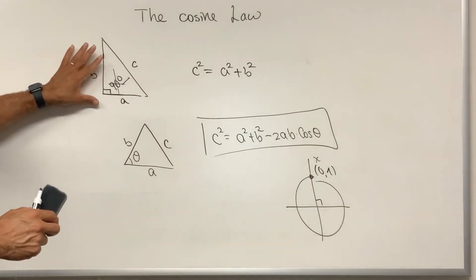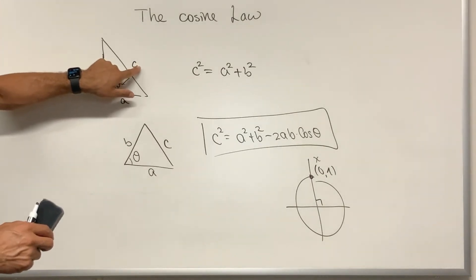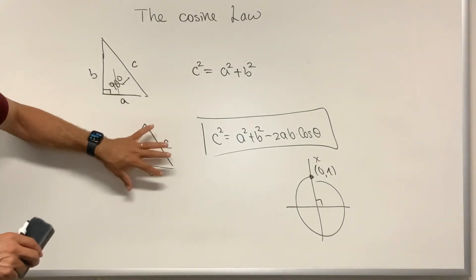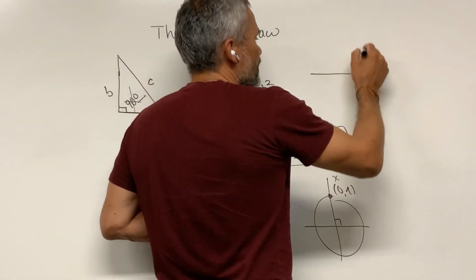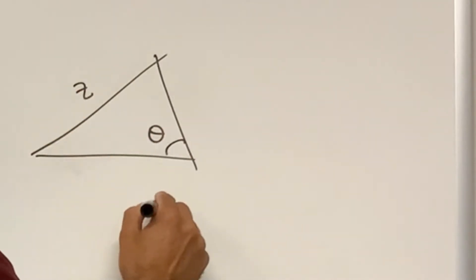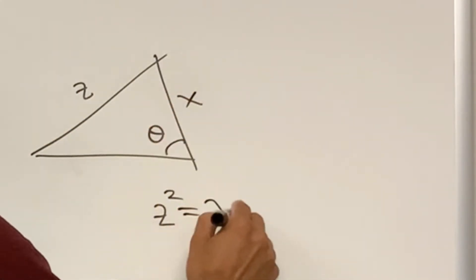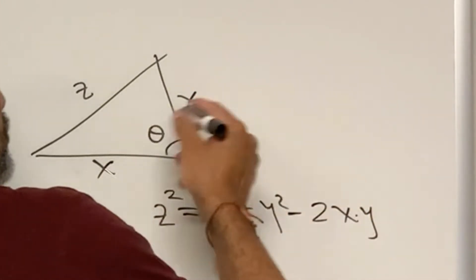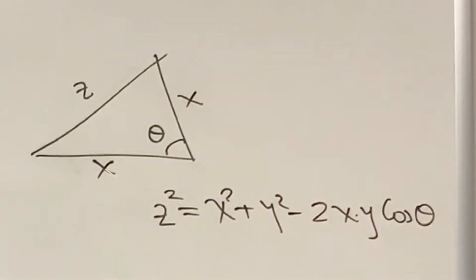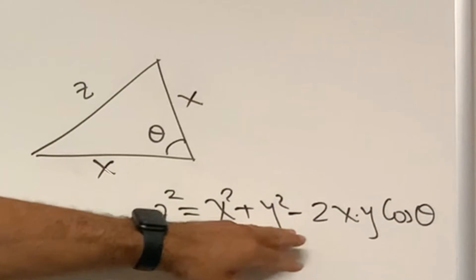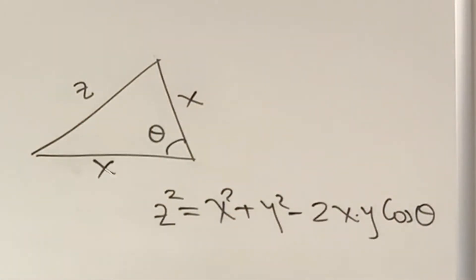A difference from the Pythagorean theorem is that in the Pythagorean theorem, C has a special name — it's called the hypotenuse, and A and B are called legs. In the cosine law, there is no reason to label A, B, C in a special way. Essentially, if you have a triangle and you know an angle, the side opposite to that angle squared equals the sum of the squares of the two sides touching the angle, minus 2 times the product of those two sides times cosine of the angle. It works for any angle.